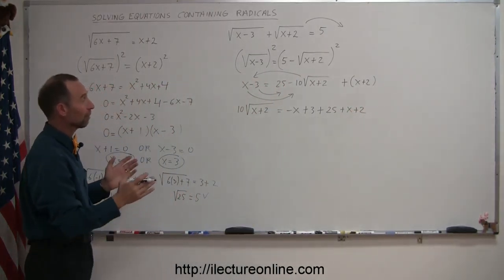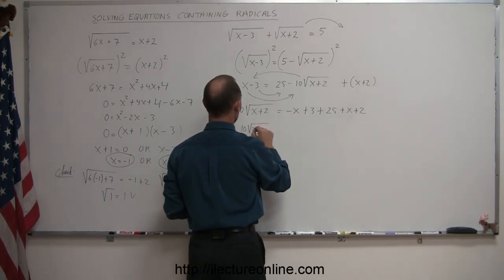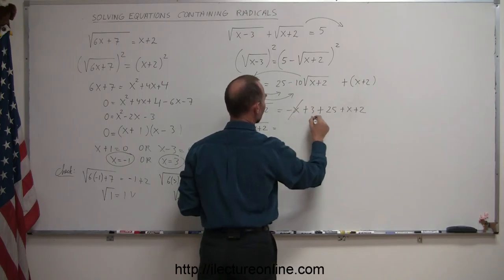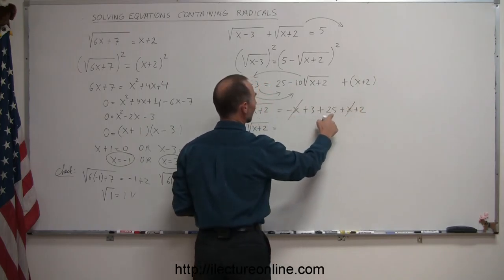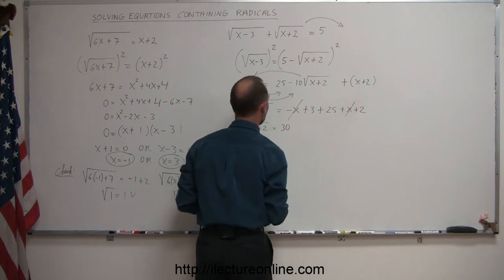You still have a positive 25, and you still have a plus x and a plus 2. Now what you need to do is combine like terms. So this is 10 times the square root of x plus 2 equals, we have a minus x plus x. The x's cancel out, so those are gone. We have a 25 plus 3 is 28, plus 2 is 30.